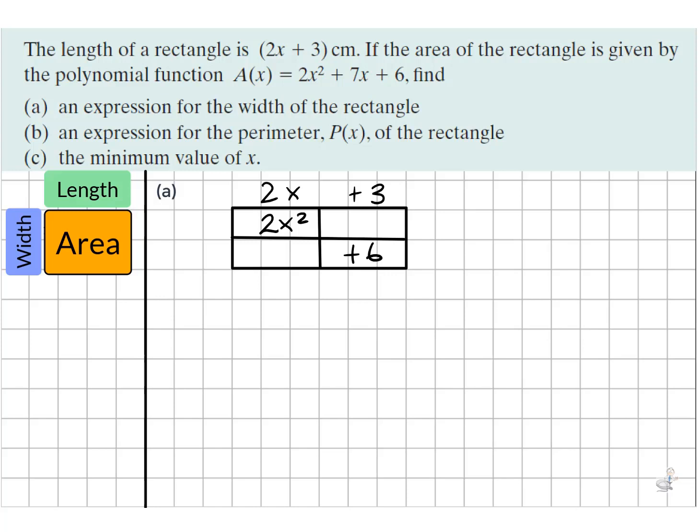What would we multiply 2x by to get 2x squared? It's x. What would we multiply 3 by to get 6? It's plus 2, so this is our solution. We multiply out the rest of the grid to see that we get 7x, which is what was given to us. We can see that this is correct, so the width then is x plus 2, in centimeters.